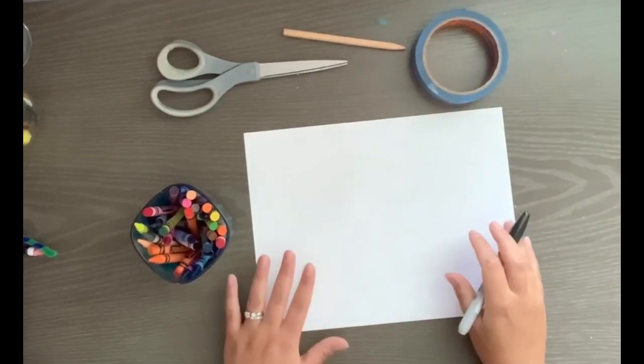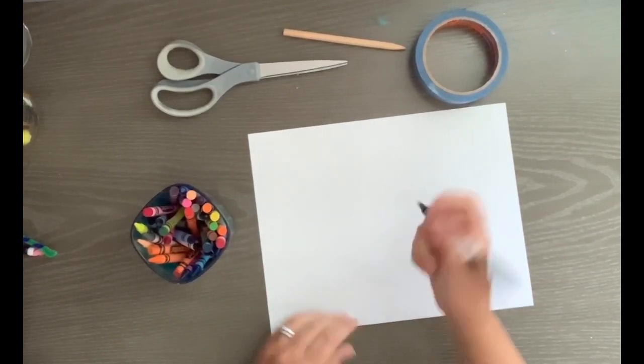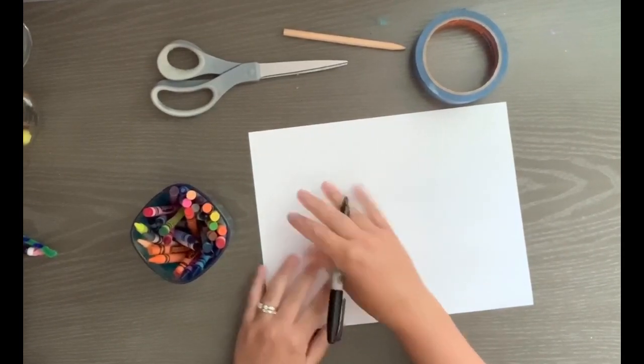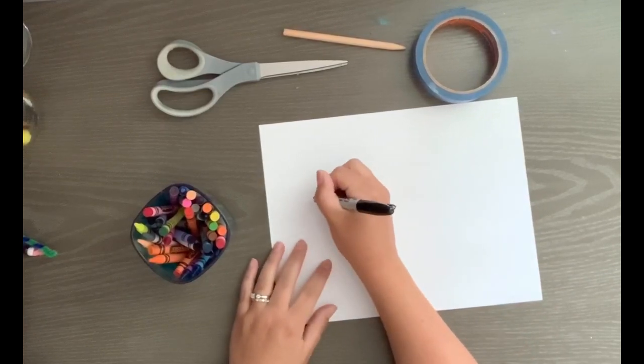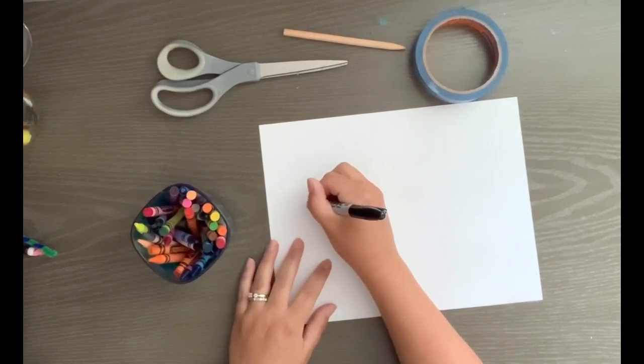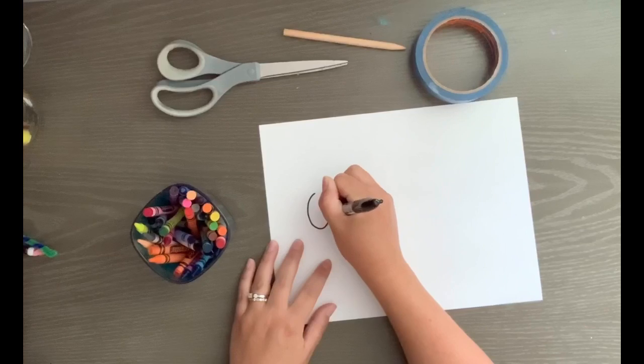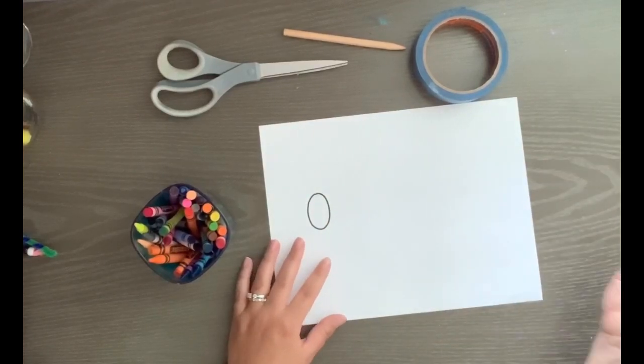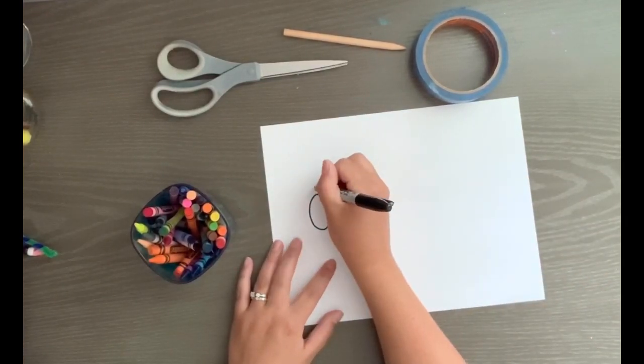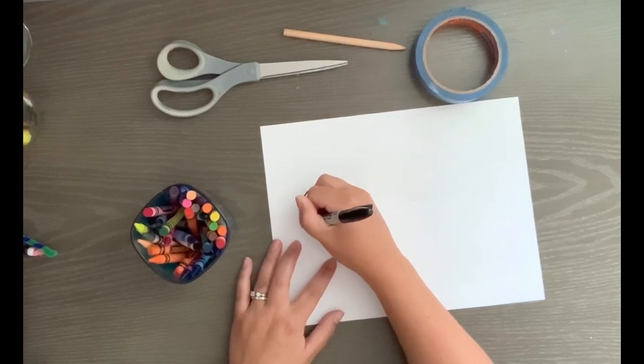So to start we're going to draw the bubble wand. I'm going to draw fairly big and I'm going to try to use this whole piece of paper. I'm going to draw an oval. The next step is going to be to draw a second one to make it look like a real wand.